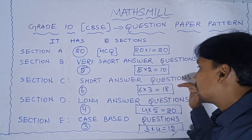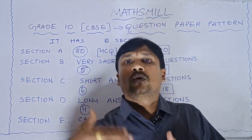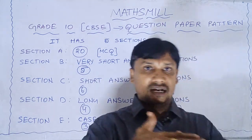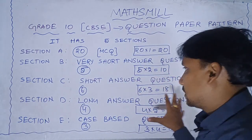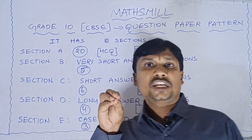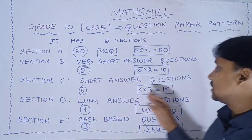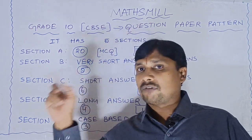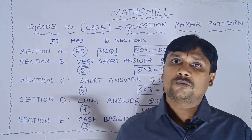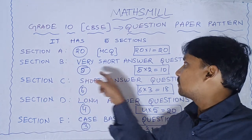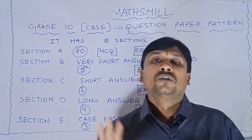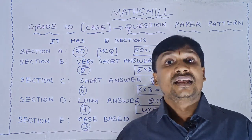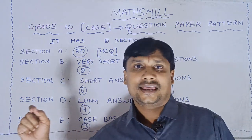Coming to Section C, it has short answer questions. It consists of 6 questions, each carrying 3 marks. So Section C totals 18 marks. Hope you have the clarity — Section A: 20, Section B: 10, Section C: 18 marks.